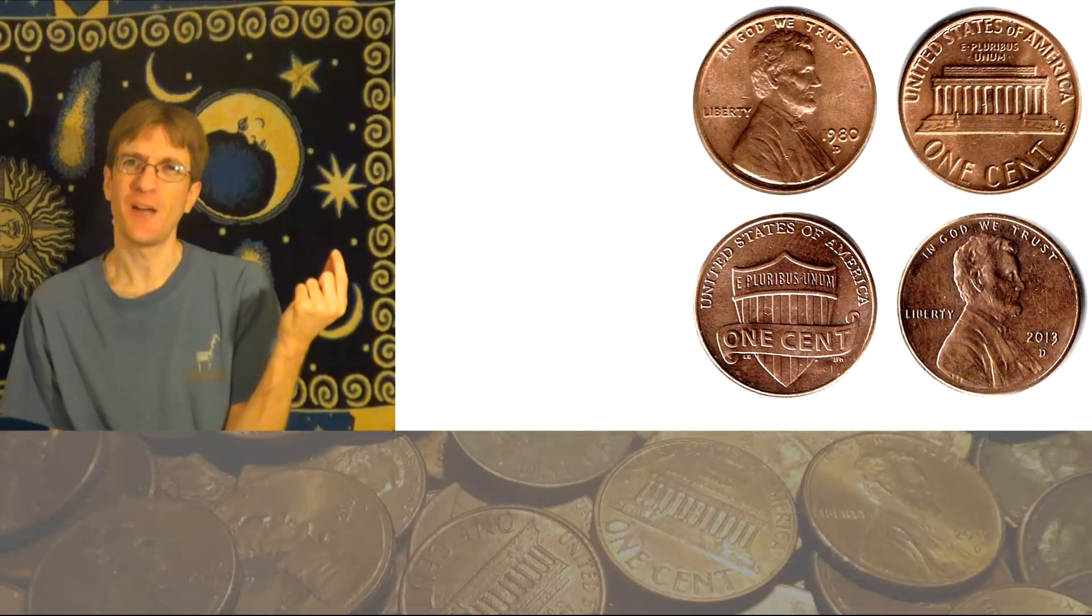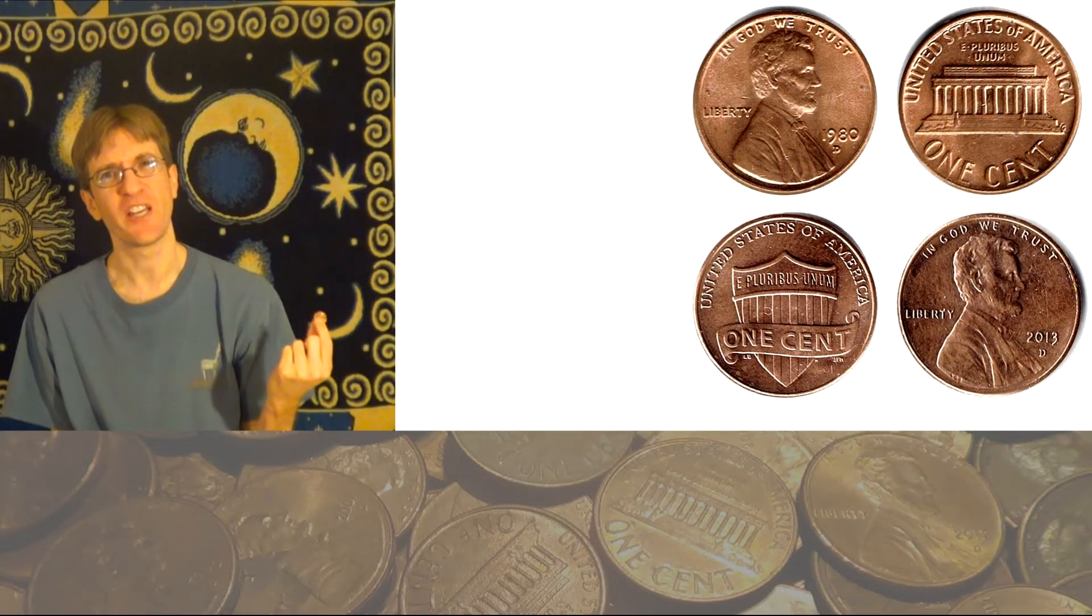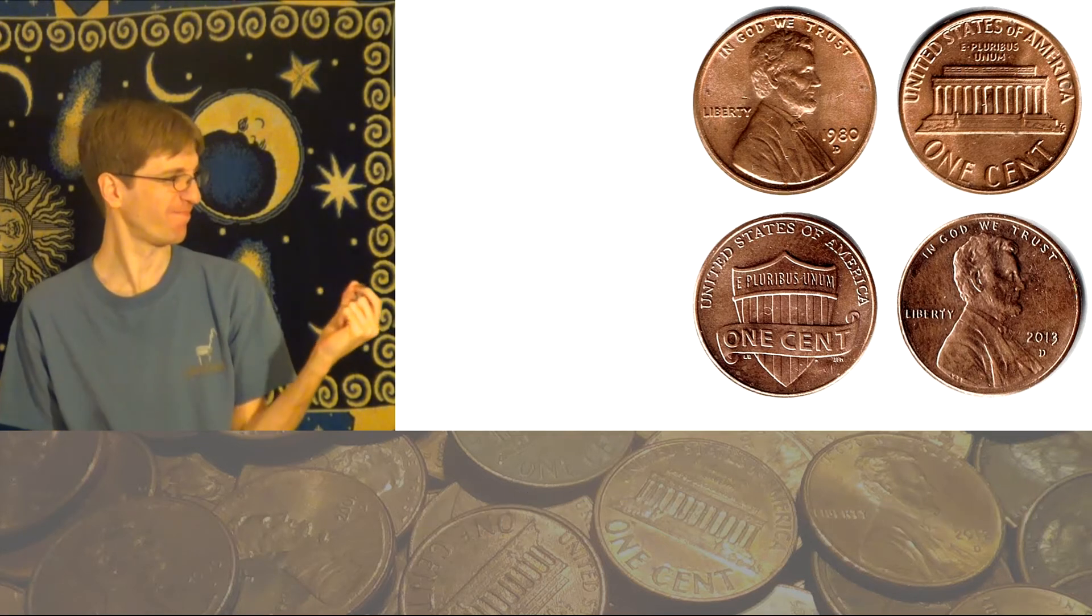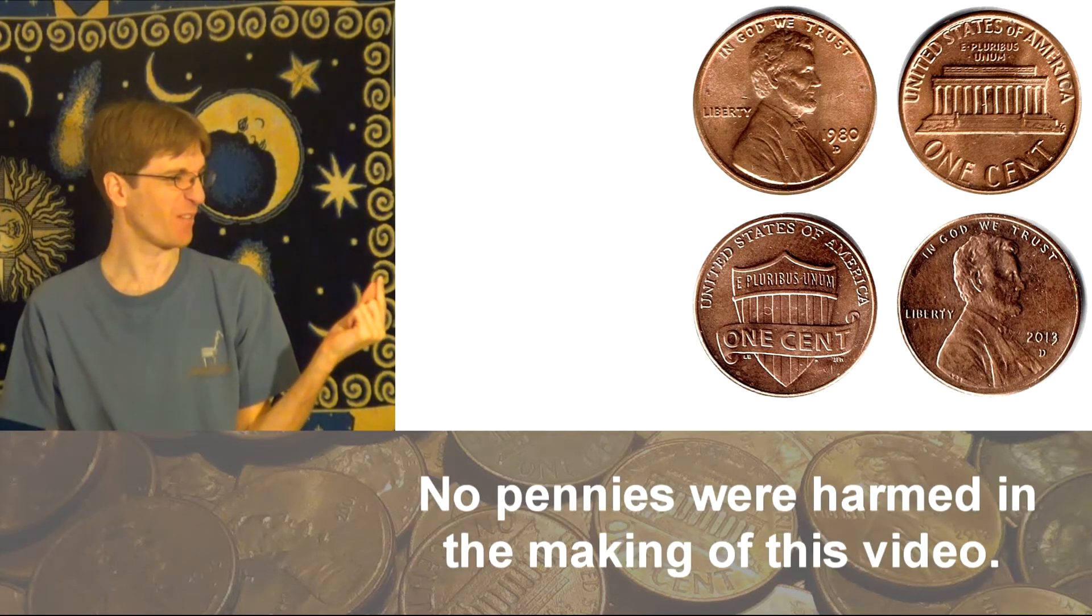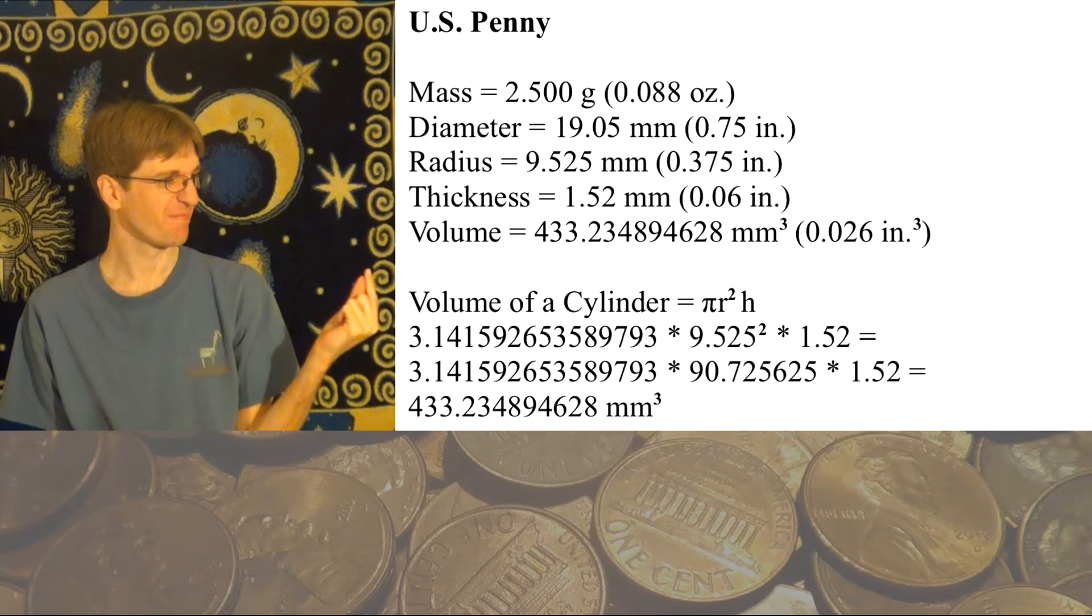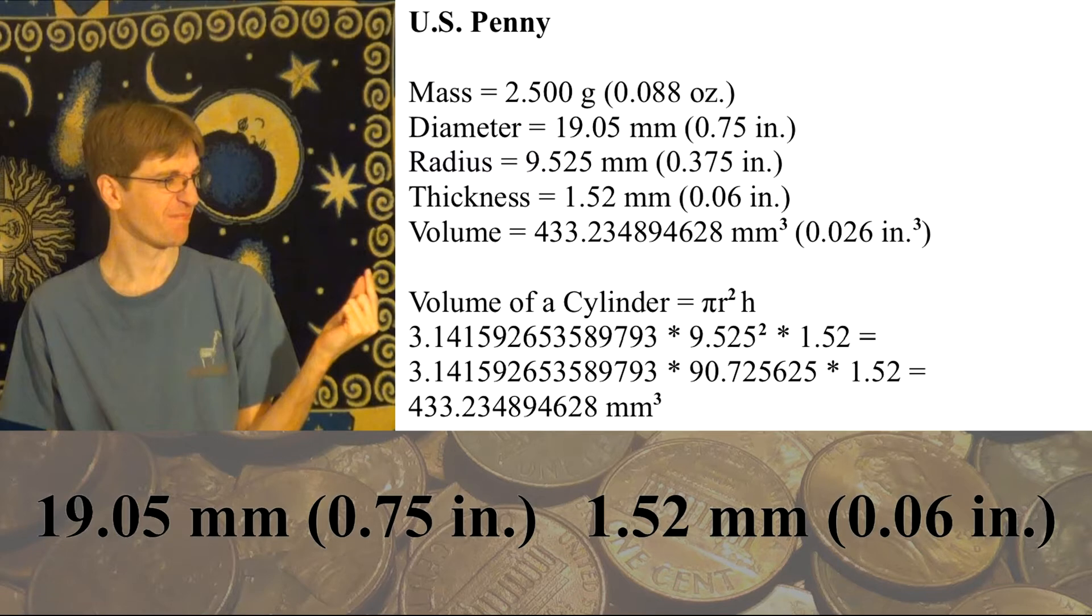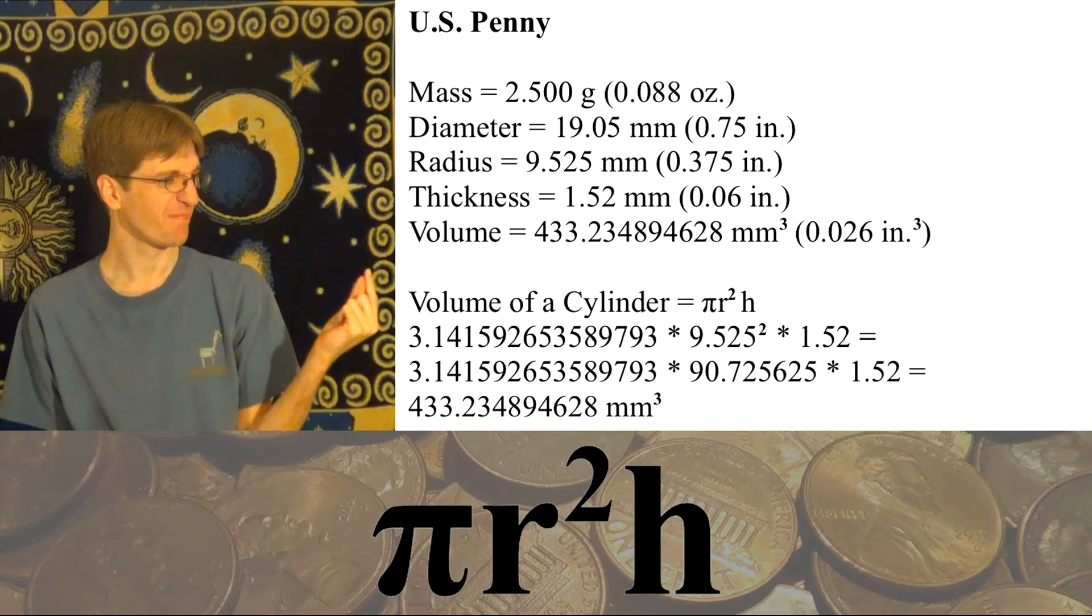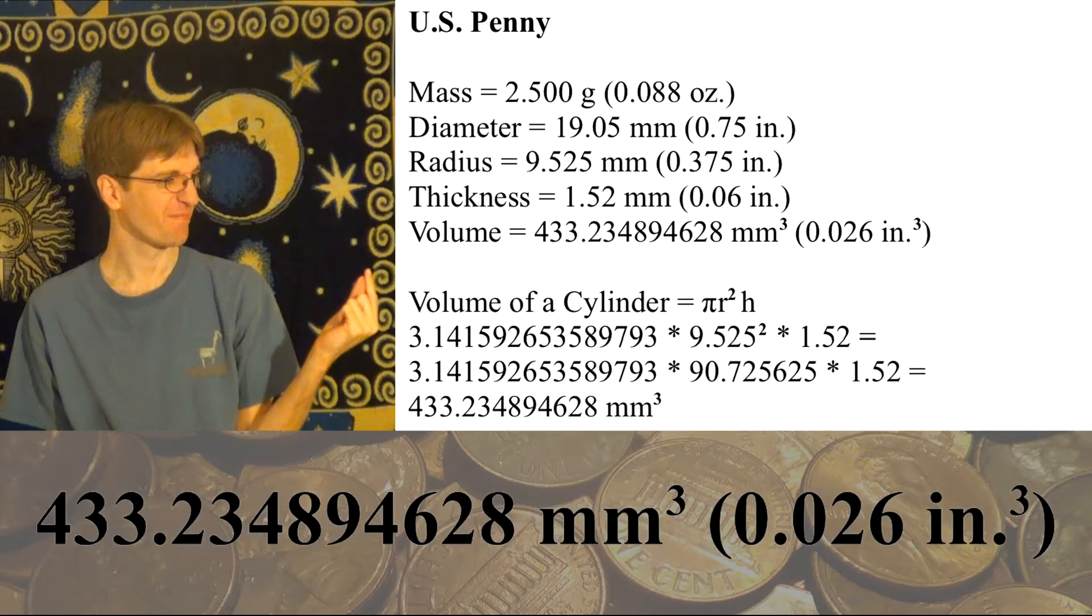To find out how many pennies you would need to fill up the entire Grand Canyon, first we need to figure out how much volume a penny takes up. Hmm, not very much. According to the U.S. Mint, a current penny is 19.05 millimeters in diameter and 1.52 millimeters in thickness. To get the answer, we just need to put these numbers into the formula for the volume of a cylinder, which comes to about 433 cubic millimeters.